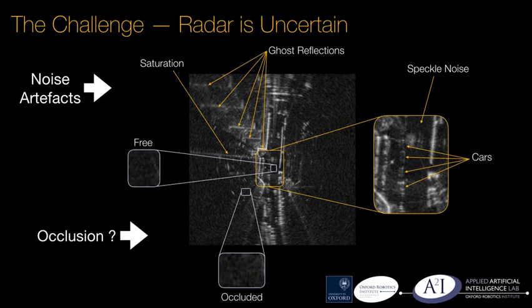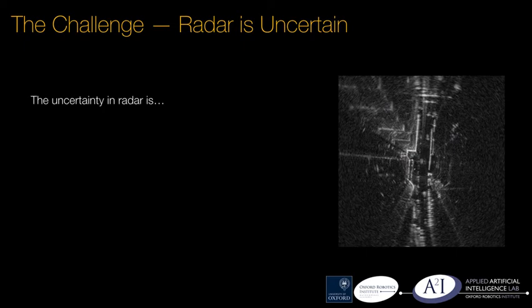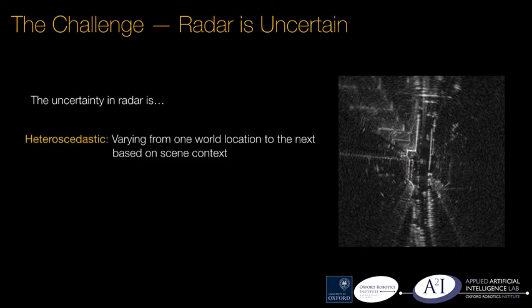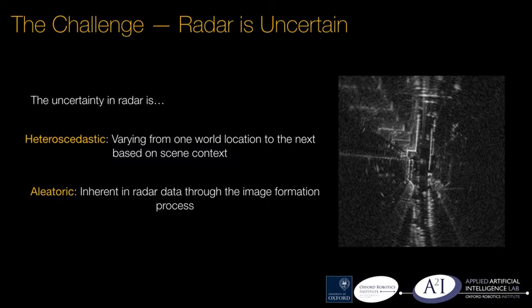Sensor noise and occlusion lead to heteroscedastic aleatoric uncertainty that varies from one world location to the next through scene context and is ever present as a result of the image formation process.